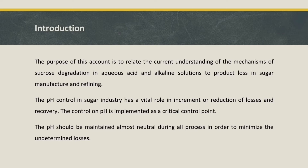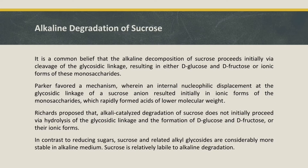pH control in the sugar industry has a vital role in the increment or reduction of losses and recovery. Control of pH is implemented as a critical control point. The pH should be maintained almost neutral during all processes in order to minimize undetermined losses.